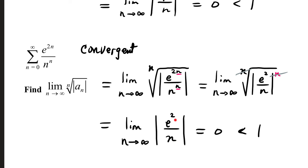e squared is a constant. If n keeps growing, this fraction goes to 0. That's less than 1, so by root test, this infinite series converges.